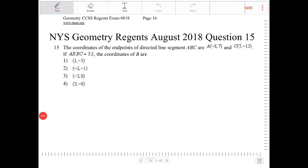The coordinates of the endpoints of directed line segment ABC are A is negative 8 comma 7, and C is 7 comma negative 13. If AB to BC is 3 to 2, the coordinates of B are. So I'm going to draw this.